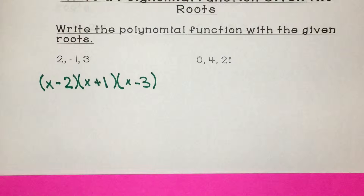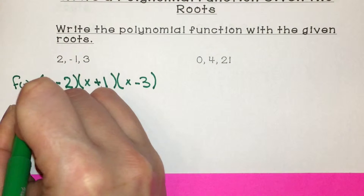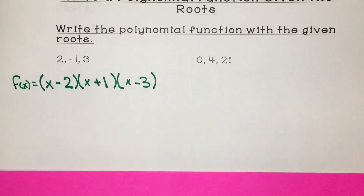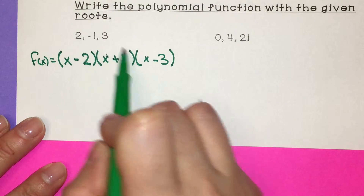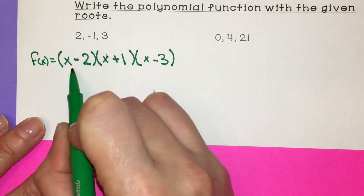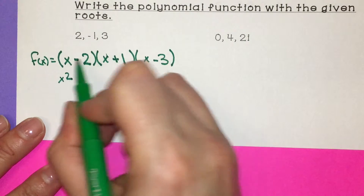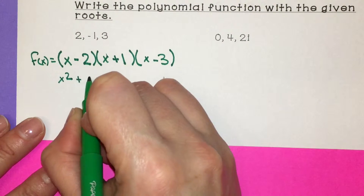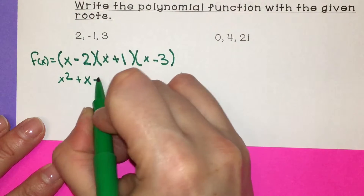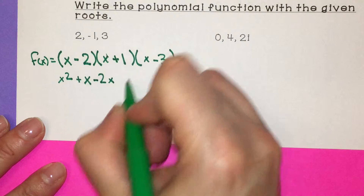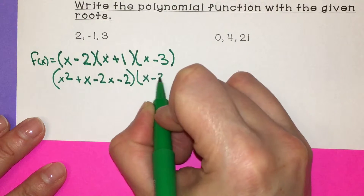It says to find the polynomial function, so we write f of x equal to the factors. I'm going to start multiplying the first two parentheses: x times x is x squared, x times 1 is x, negative 2 times x is negative 2x, and negative 2 times 1 is negative 2.